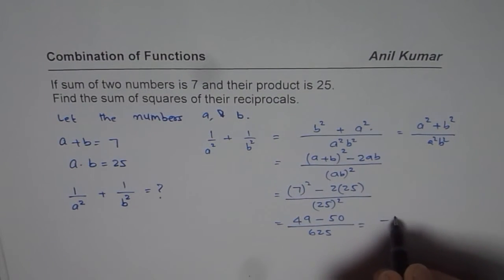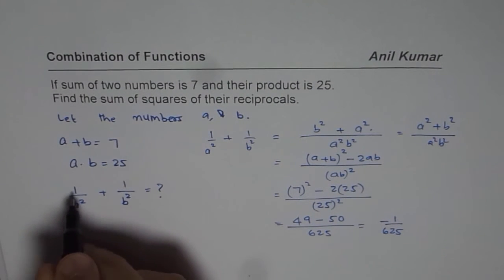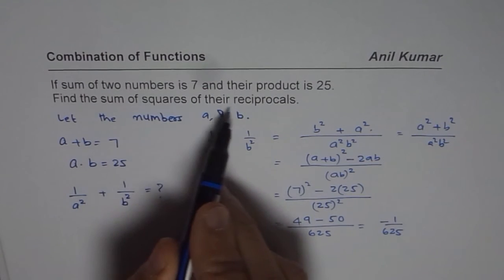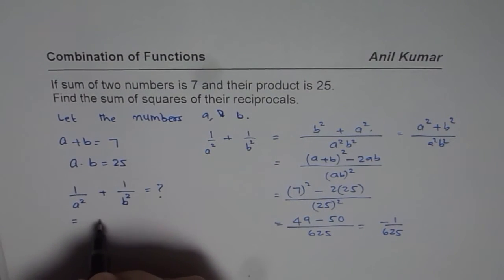Or we can say it is minus 1 over 625. Therefore we know the sum of the squares of the reciprocals is equal to minus 1 over 625.